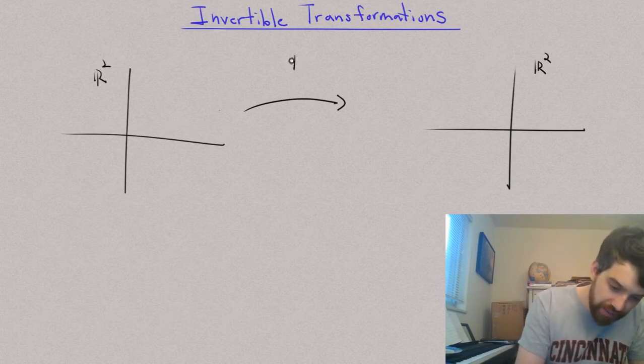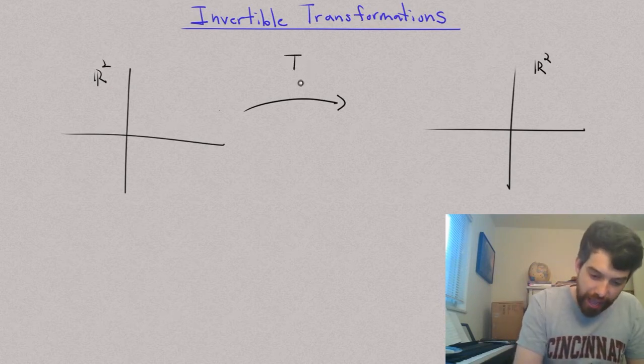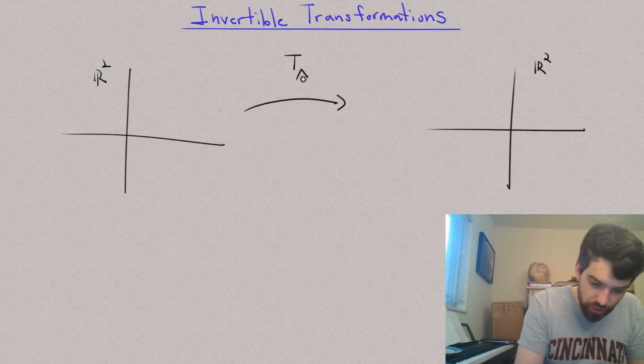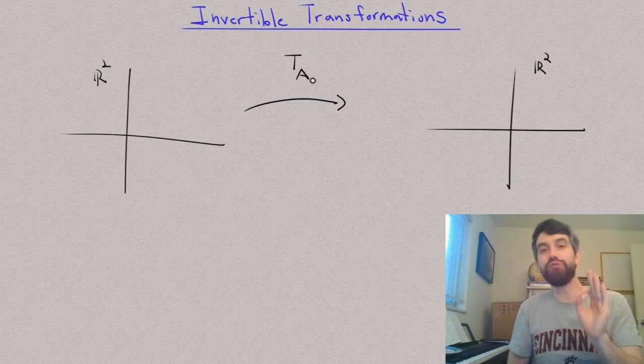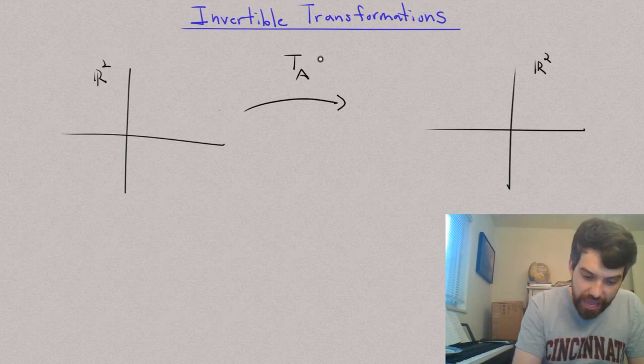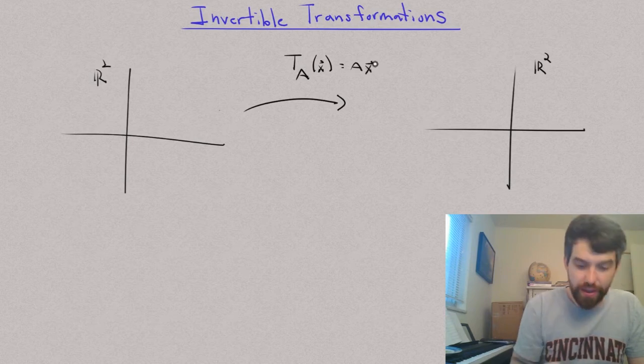But nonetheless, I'm going to have some transformation T and it is going to be a linear transformation that has a matrix A that defines it. So in other words, the TA is going to take some vector X and it's just going to be that matrix A times the vector X.